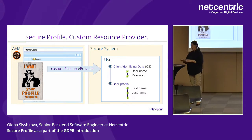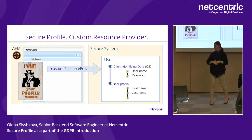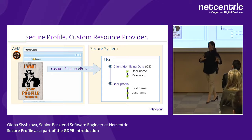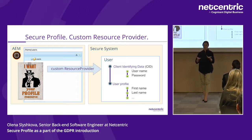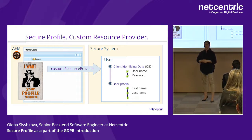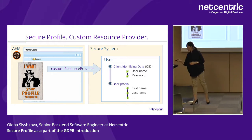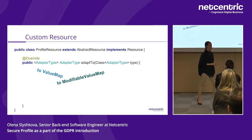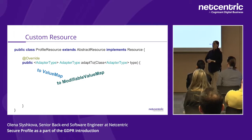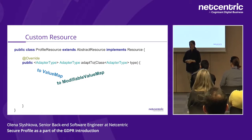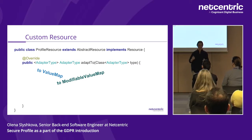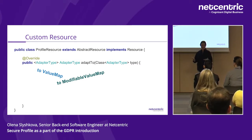We have achieved what we wanted: user profile is transferred out of AEM, no profile data remains in JCR, and all requests to profile resources are handled by the custom Resource Provider fetching from the secure system. But now let me share the challenges. We also need a custom Resource implementation — Resource is an interface we must implement, and it has many useful methods like getValueMap.